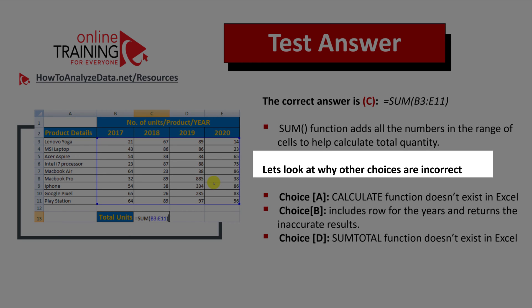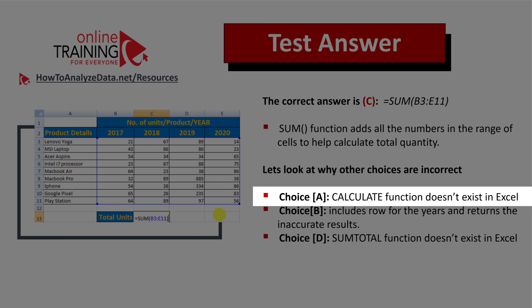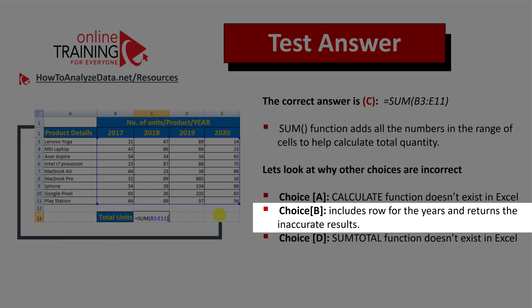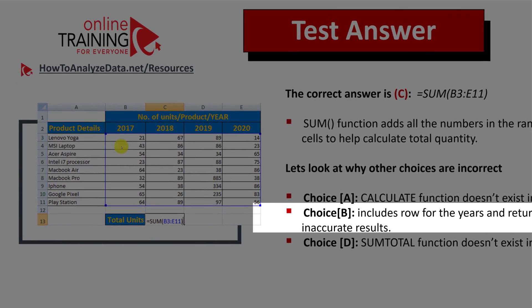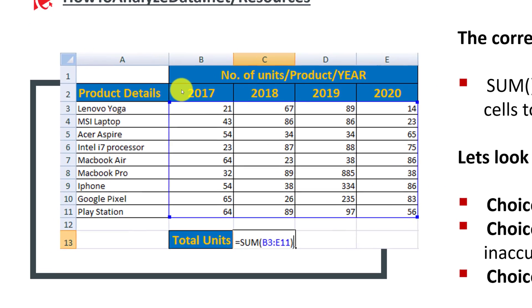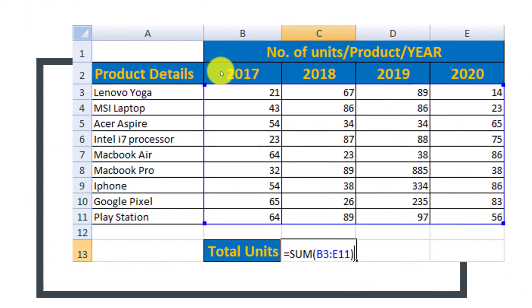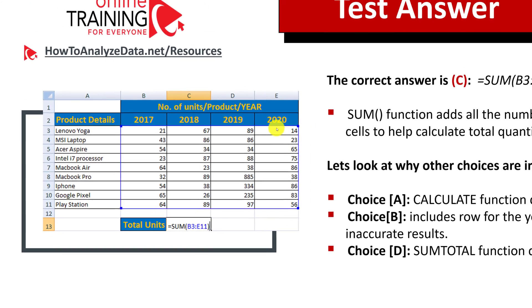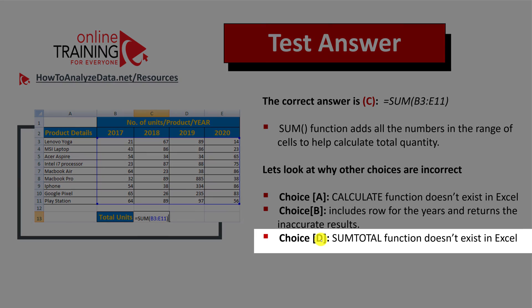Now let's look at why the other choices are incorrect. Choice A has a CALCULATE function, which doesn't exist in Microsoft Excel. Choice B includes the row for the years and returns inaccurate results — its range starts with B2, which would include 2017, 2018, 2019, and 2020, exaggerating the numbers. And choice D uses a SUMTOTAL function, which also doesn't exist in Excel.